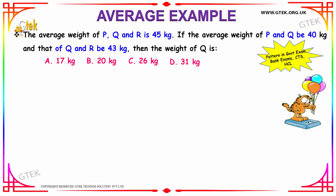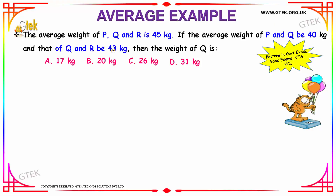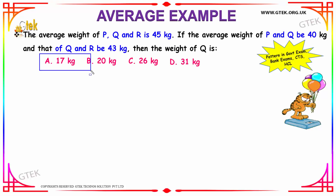The average weight of P, Q, and R is given to be 45 kg. If the average weight of P and Q is 40 kg and that of Q and R is 43 kg, then the weight of Q is what we have to find. The options are given as 17, 20, 26, and 31 kg.